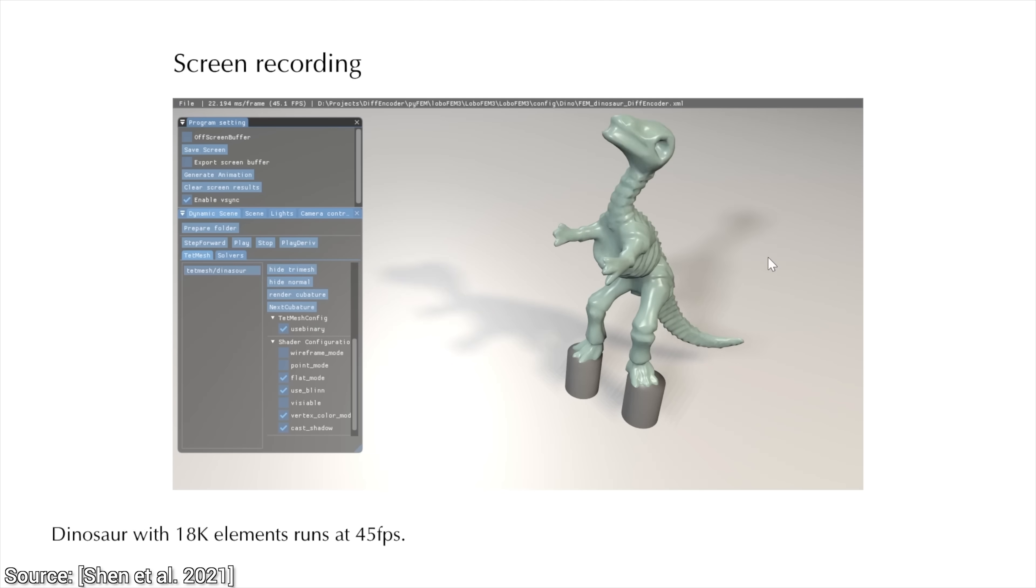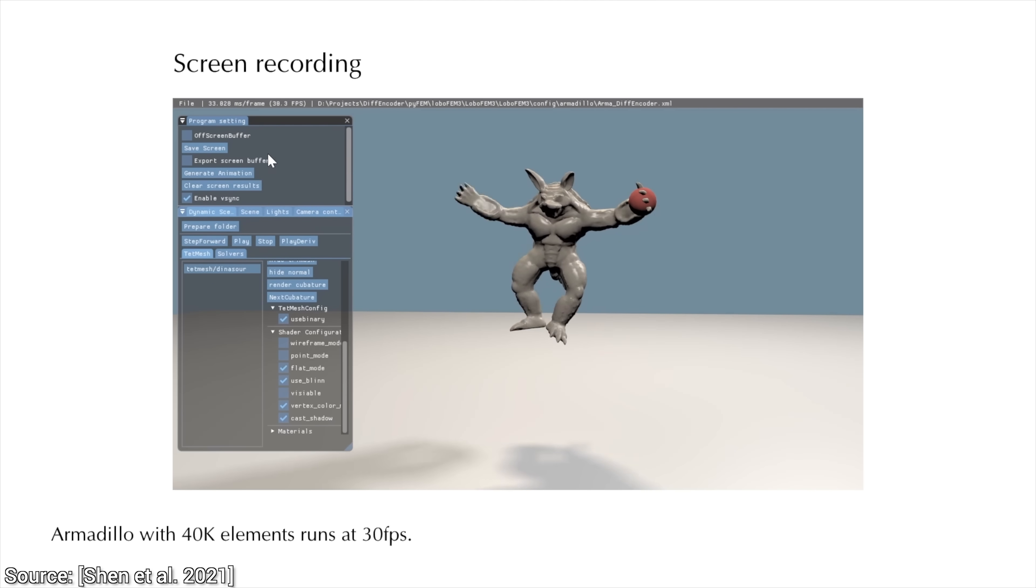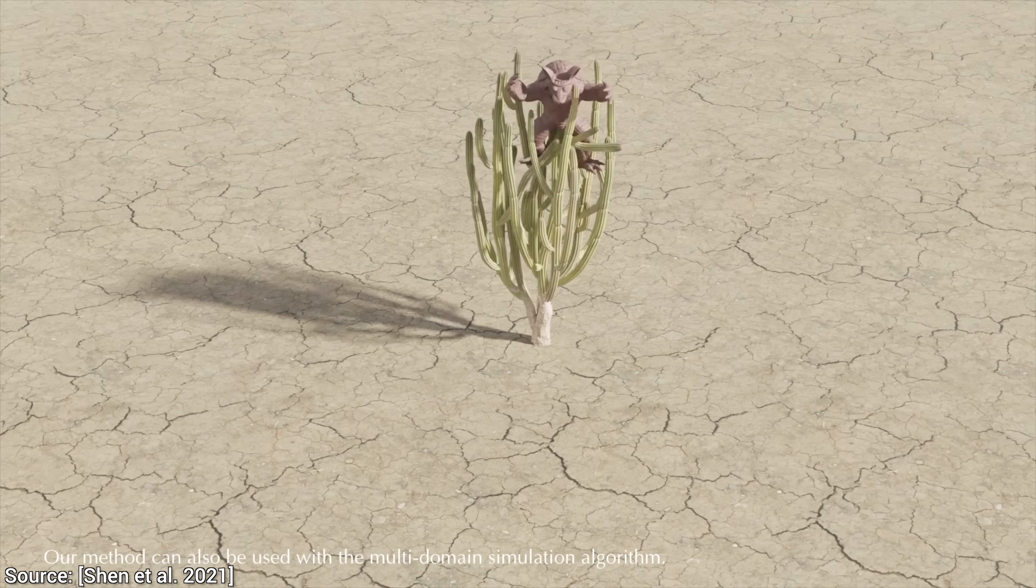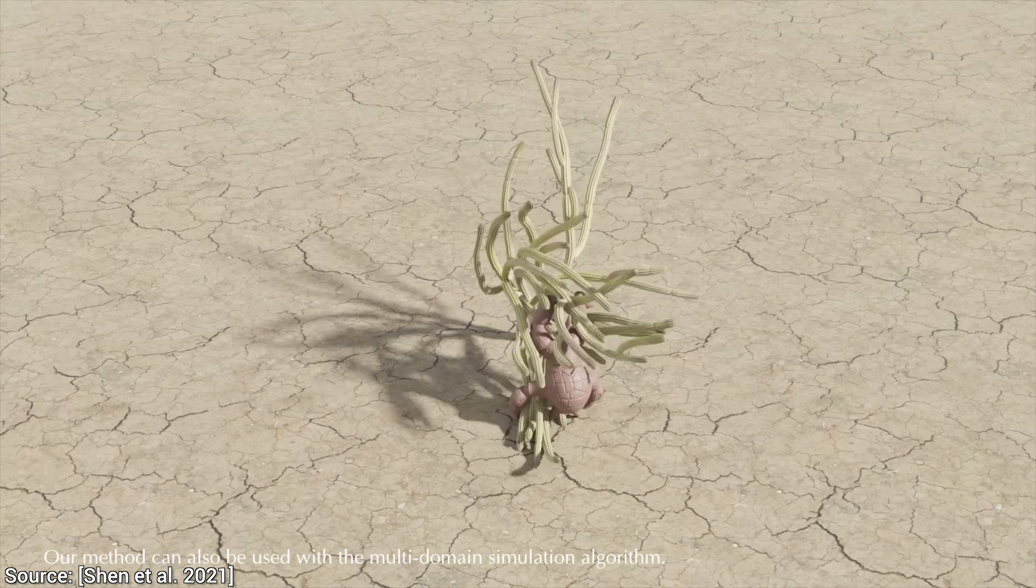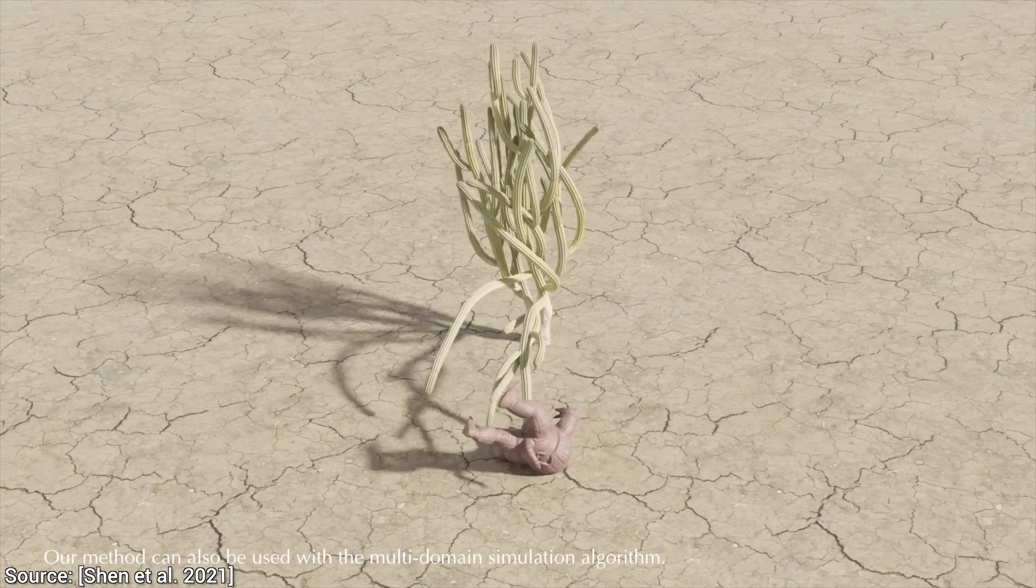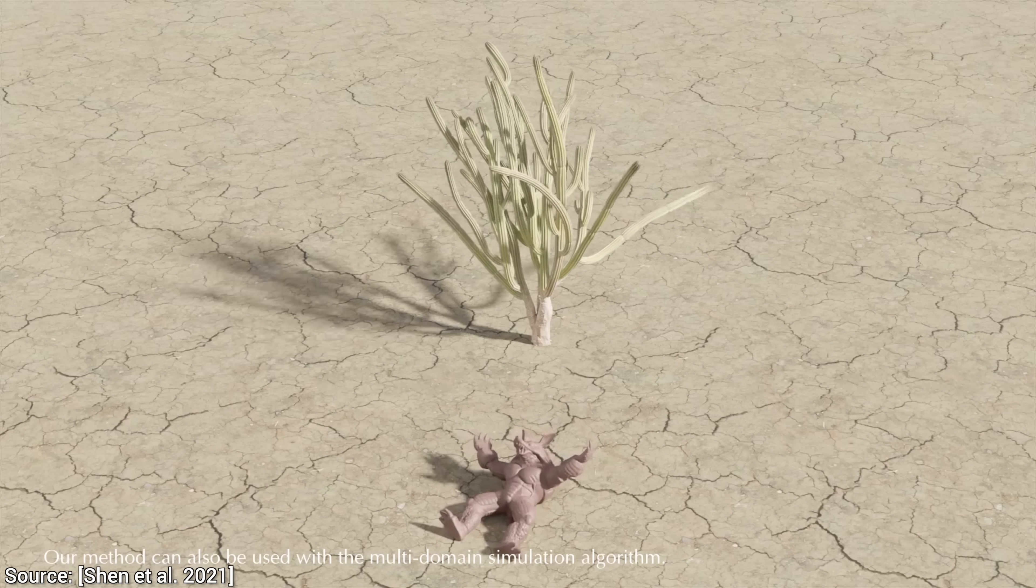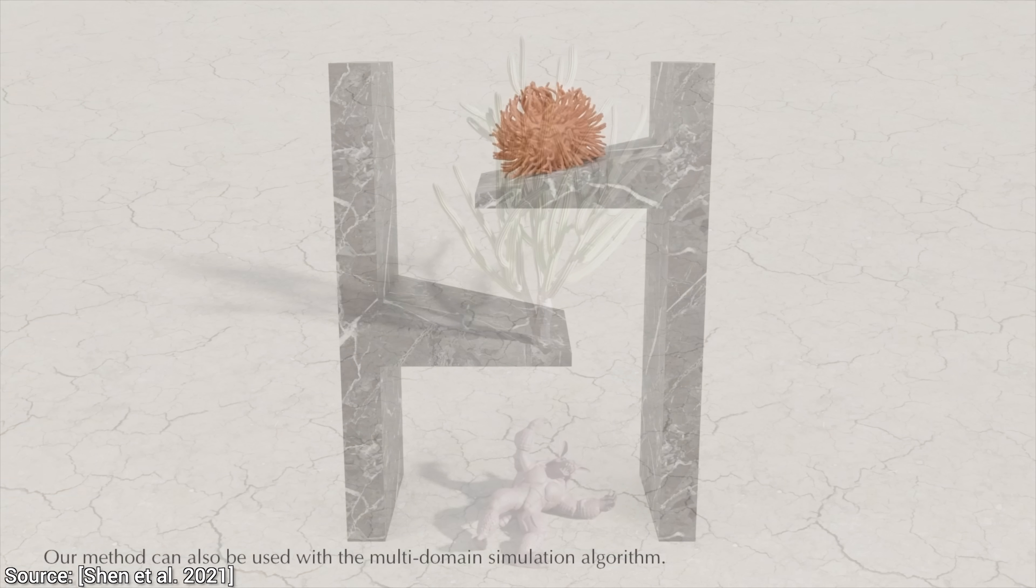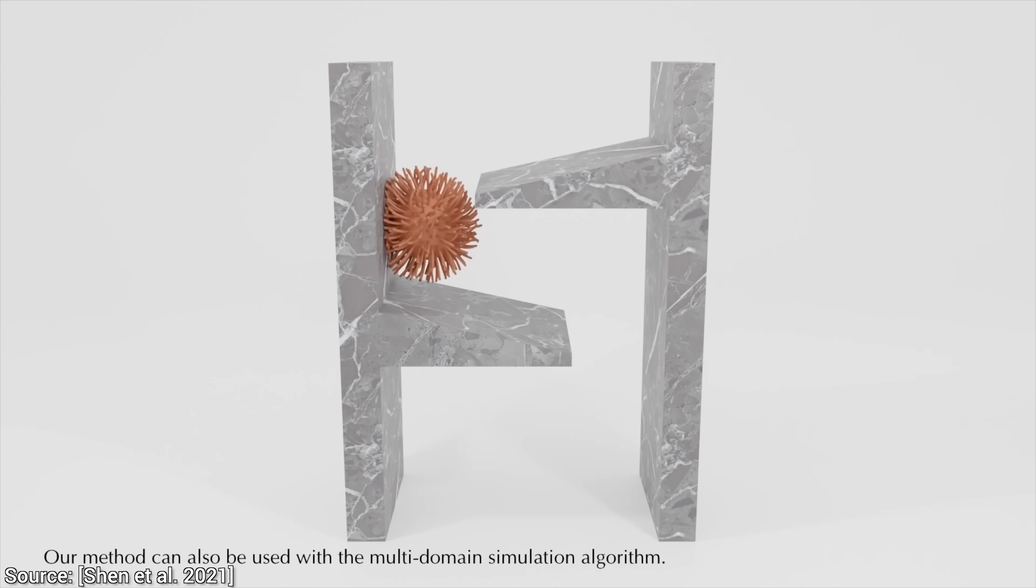All this runs in real time for this dinosaur, bunny, and armadillo scenes, all of which are built from about 10,000 triangles. And we can play with them by using our mouse on our home computer. The cactus and hairball scenes require simulating, not tens, but hundreds of thousands of triangles, so these took a bit longer, as they are running between one and a half and two and a half frames per second.